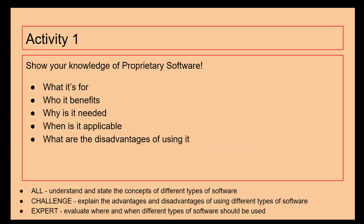So activity one: I want you to show me your knowledge of proprietary software. I want to know what it's for, who it benefits, why it's needed, when it's applicable to use it, and what are the disadvantages of using it. Remember, if you're going for the challenge of the expert, you need to move on from bullet points and single sentences and write in paragraphs. You can now pause the video and then we'll carry on in just a second.